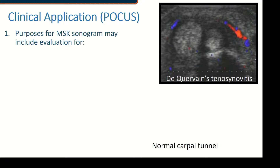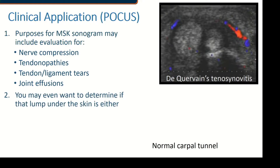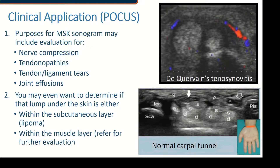First, we're going to go over the clinical applications. The purposes of an MSK sonogram can include quite a few things, but for POCUS you might be looking for nerve compression, tendinopathies, tendon and ligament tears, or joint effusions. You may also want to determine if a lump the patient feels is within the subcutaneous tissue, like a lipoma — which is less concerning — or within the muscle layer, in which case you might want to refer that patient for further evaluation.